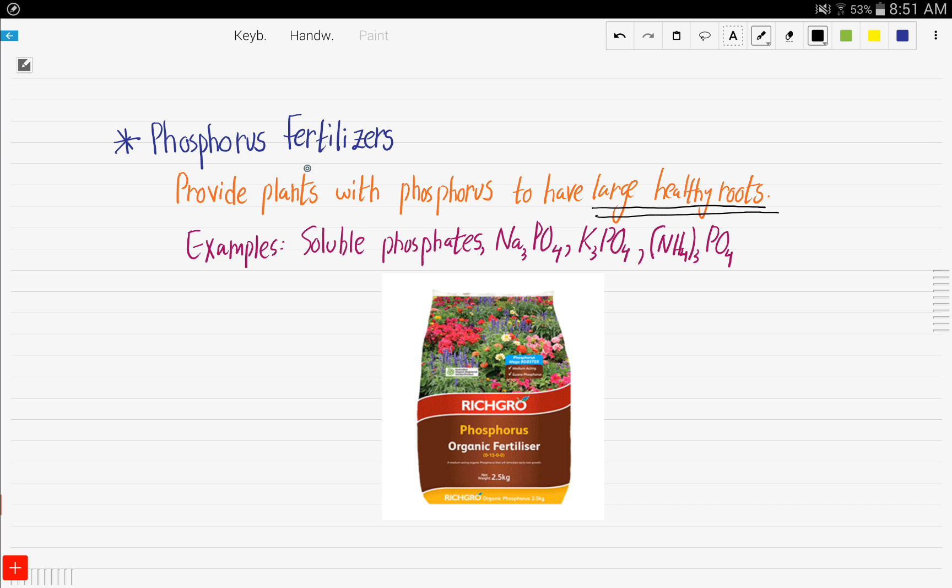Examples of phosphorus fertilizers include soluble phosphates, sodium phosphate, potassium phosphate, ammonium phosphate, and much more.